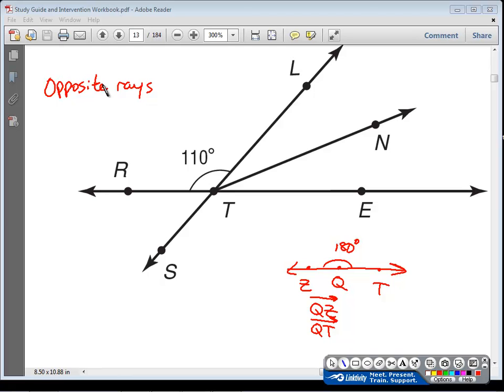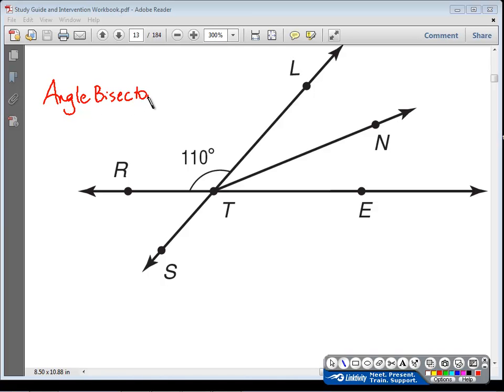One more thing here is going to be angle bisector. That is pretty much self-explanatory, but a ray can be an angle bisector if it is cutting a bigger angle perfectly in half. So let's take angle LTE, and imagine that ray TN is bisecting it, cutting it exactly in half. If an angle is bisected and it's exactly in half, that means that these two new angles that are formed have equal and congruent angle measures. So we could say that angle LTN is congruent or equal to angle NTE.